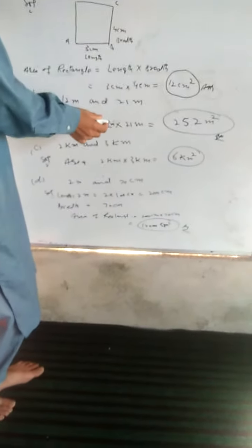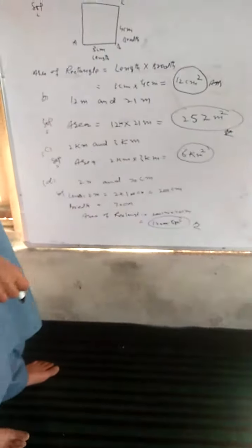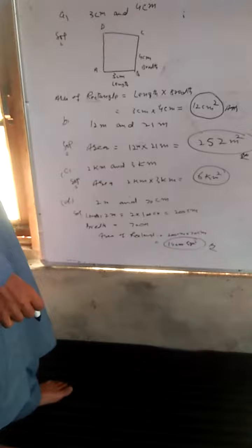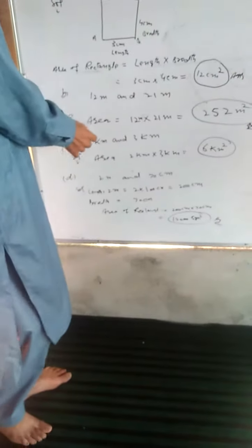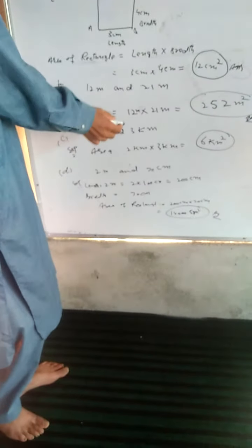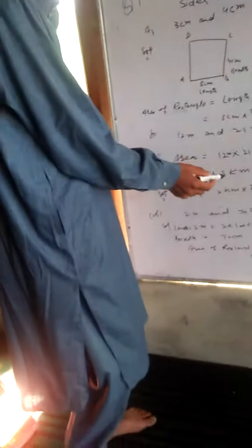Area = 12m × 21m = 252m². For case C, the dimensions are 2km and 3km, so the area = 2km × 3km = 6km².